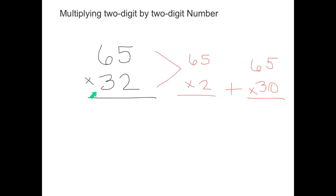Sixty-five times thirty-two is the same thing as multiplying sixty-five times two, because we have a two in the ones place, and adding it to sixty-five times thirty, because we have a three in the tens place.